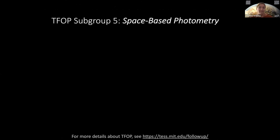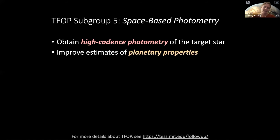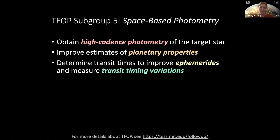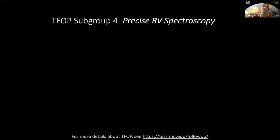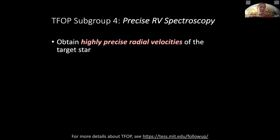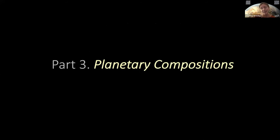In subgroup five, we have space-based photometry — looking at the star and getting high cadence observations of the brightness. This allows you to get another handle on planet properties, determine better ephemerides, measure transit timing variations, and expand into space-based spectroscopy to measure planetary atmospheres. I did intentionally talk about subgroup five before subgroup four because subgroup four is the one closely connected to this conference. Subgroup four is precise radial velocity spectroscopy, where you measure the Doppler shift of the target star and figure out the mass of the planet and try to estimate the planet density.